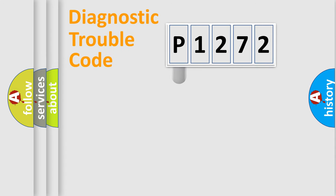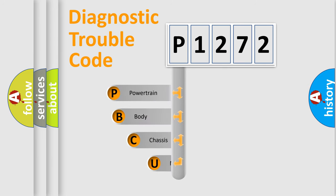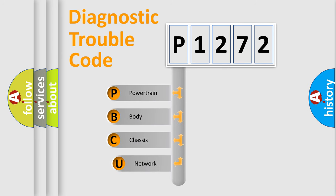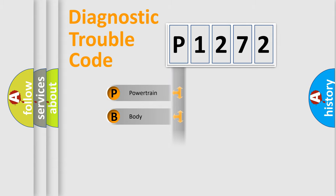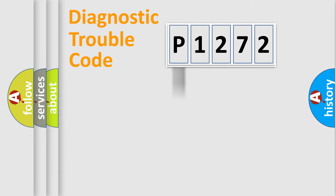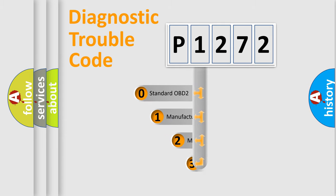Let's look at the history of diagnostic fault code composition according to the OBD2 protocol, which is unified for all automakers since 2000. We divide the electrical system of the automobile into four basic units: Powertrain, Body, Chassis, and Network. This distribution is defined in the first character of the code.